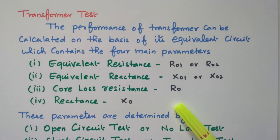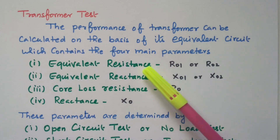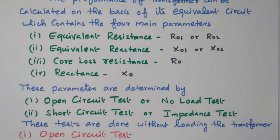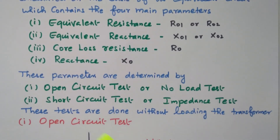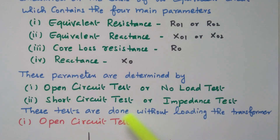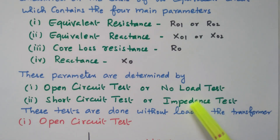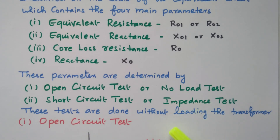From the equivalent circuit, we can analyze the performance of the transformer. To identify these four parameters, we need to perform the transformer test. There are two types of tests available: the open circuit test (or no load test) and the short circuit test (or impedance test). These four parameters are calculated from these two tests.